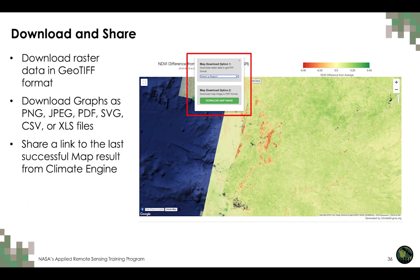Climate Engine provides the ability to download or share results instead of processing entire data archives locally. Maps can be downloaded as raster files in GeoTIFF format, and graphs can be downloaded as PNG, JPEG, PDF, CSV, or XLS files. You can also share a link to the last successful map result when collaborating with colleagues. Climate Engine is fully customizable for spatial and temporal analyses, providing a comprehensive set of variables that offer early warning indicators of climate impacts for fire.